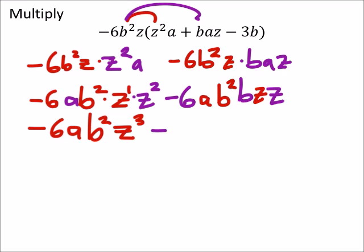This would give me a negative 6. No other a's. I've got a b squared and a b to the power of 1. So, that would give me 3 b's. And that's my exponent of the 3. And then I've also got the z's. And I've got two of those.